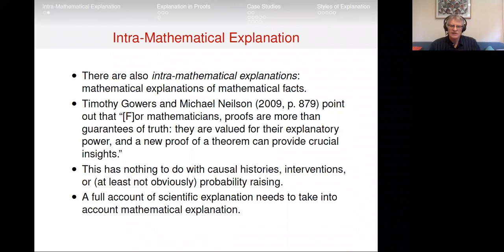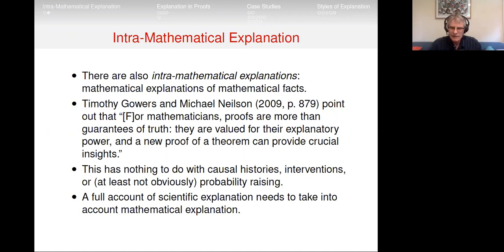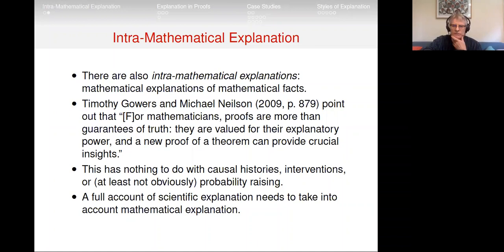Mathematics, if true at all, is true by necessity — probabilities are all one, there can't be any interventions in the usual sense. Mathematical explanation looks like something very different from what philosophers of science generally think about. So a full account of scientific explanation needs to take into account mathematical explanation. Equally, speaking as a philosopher of mathematics, an account of mathematical explanation needs to sit well with scientific explanation — you can't come up with a theory of mathematical explanation that looks completely alien to scientific explanation.